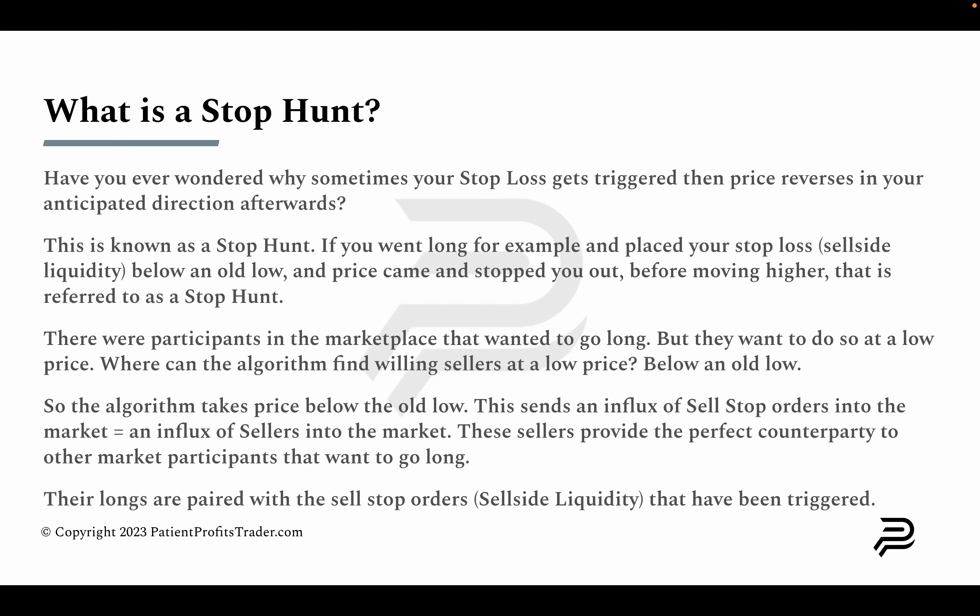When the algorithm takes out an old low, it sends an influx of sell-stop orders into the market — flooding it with sellers. These sellers provide the perfect counterparty to market participants that want to go long. Their longs are paired with the sell-stop orders or sell-side liquidity that has been triggered. This is the crux of the market — this is what makes price gyrate up and down. If you understand this, it will make a huge impact in your trading.